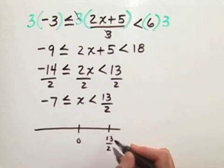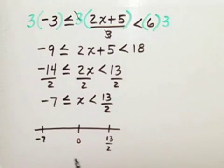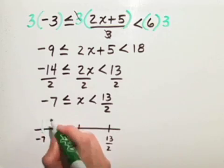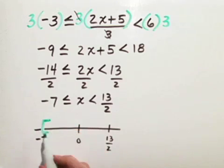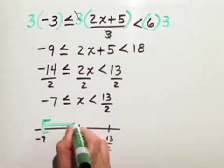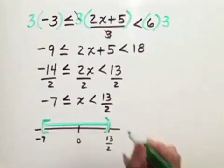13 halves is about 6 and a half, and negative 7. We want to have x isolated such that negative 7 is less than or equal to x, so we want numbers going to the right, up to but not including 13 halves.